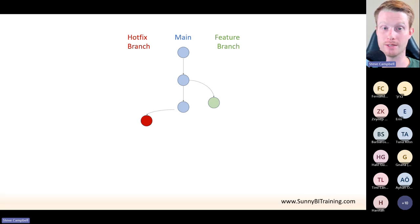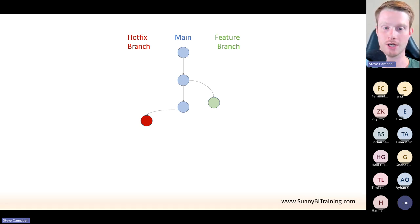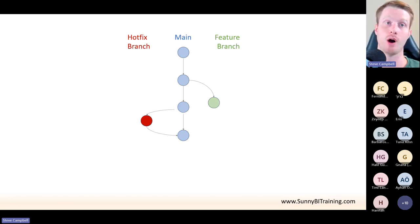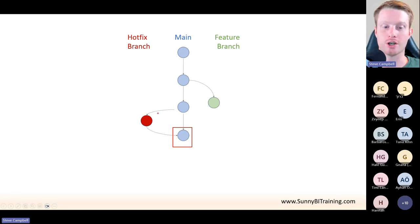This hotfix is another separate work stream — it might be the same team or a different team. Several people work on this branch and they're just going to fix this measure. They work ahead, realize the mistake, update the measure, and are happy with it. So they say: this branch where we fixed the measure, we've tested it — now let's merge that back into the main branch. On the hotfix branch where we fixed the measure, we're going to add our changes back to the main copy of the code.